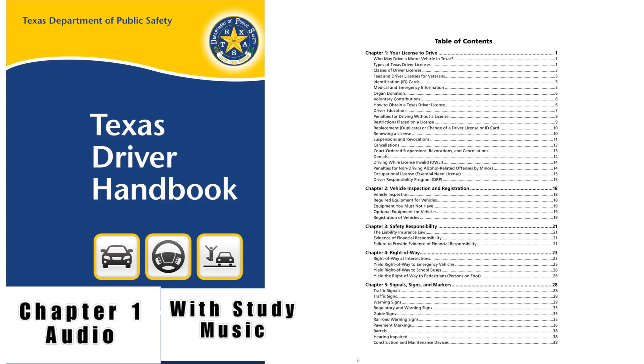Class B Driver License: A Class B Driver License permits a person to drive: 1. Any vehicle included in Class C. 2. A single vehicle with a Gross Vehicle Weight Rating (GVWR) of 26,001 pounds or more, and any such vehicle towing either a vehicle with a GVWR that does not exceed 10,000 pounds, or a Farm Trailer with a GVWR that does not exceed 20,000 pounds. A Class B Driver License does not permit a person to drive a motorcycle or moped.